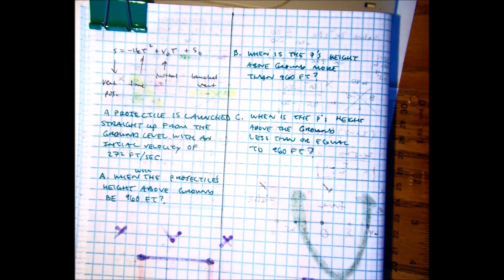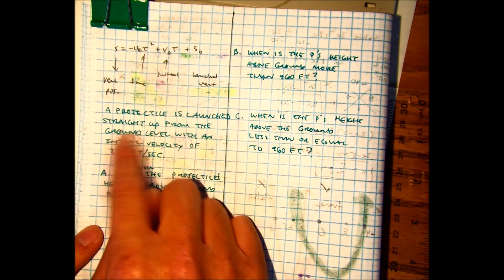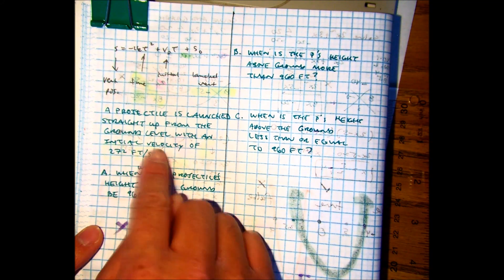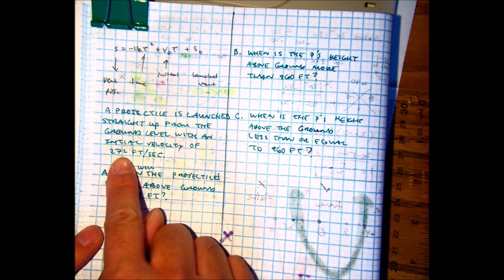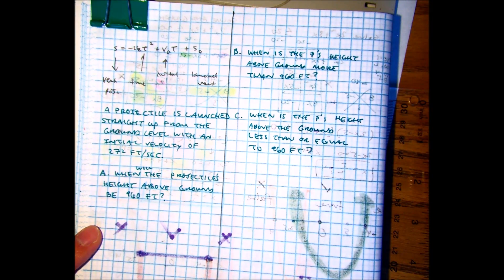In this problem it tells us a projectile is launched straight up from ground level with an initial velocity of 272 feet per second. So let's create ourselves a visual.